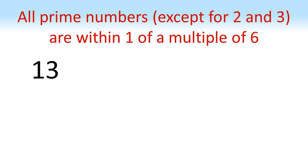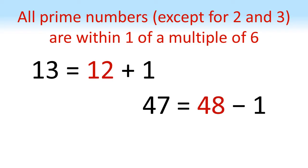So for example, 13 is a prime number, that's equal to 12, a multiple of 6, plus 1. 47 is another prime number, that's equal to 48 minus 1, so again a multiple of 6 minus 1. Even a bigger prime like 487, well that's equal to 486, which is a multiple of 6, plus 1.